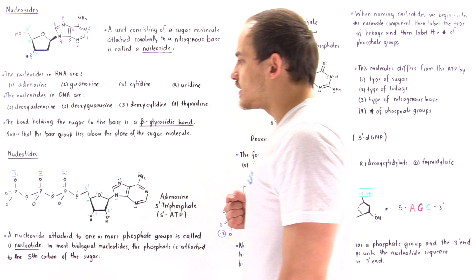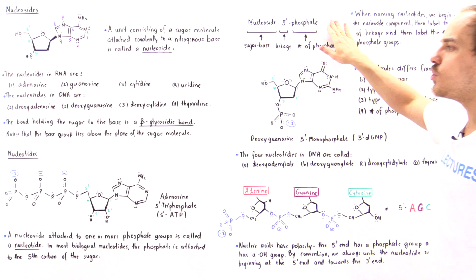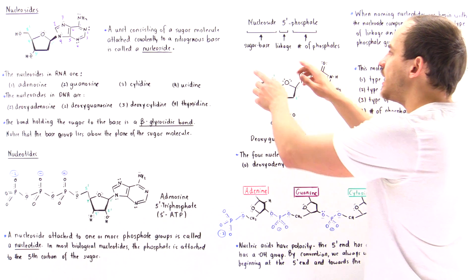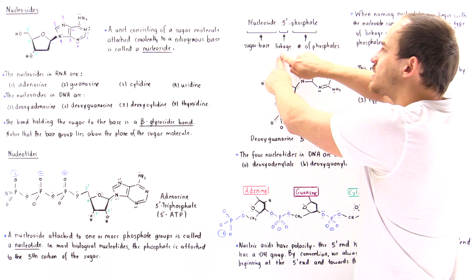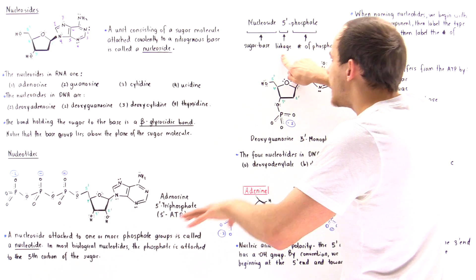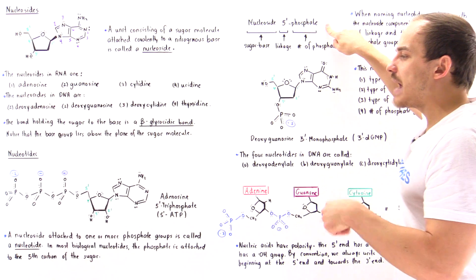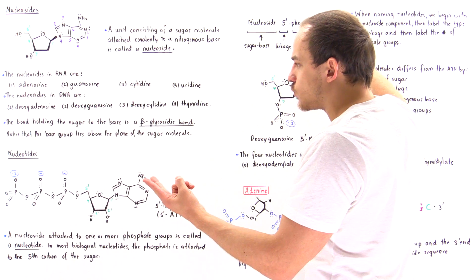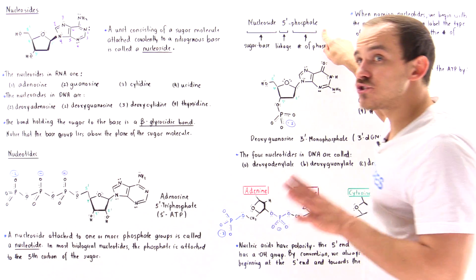How do we name nucleotides? We use the following formula: we begin with the sugar base — that's the nucleoside. Then we move on to the type of linkage that exists between the sugar and the phosphate groups. Then we move on to the number of phosphate groups that we have. If we have a single phosphate group, that's monophosphate. If we have two phosphate groups, that's diphosphate. Three phosphate groups, as in this case, that's triphosphate.